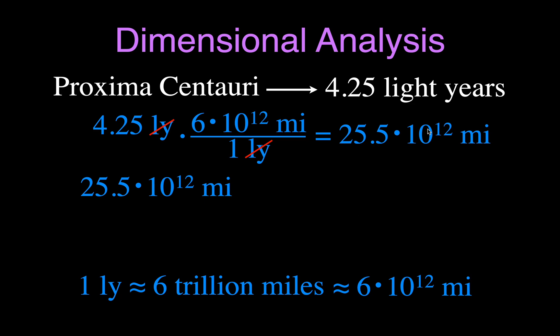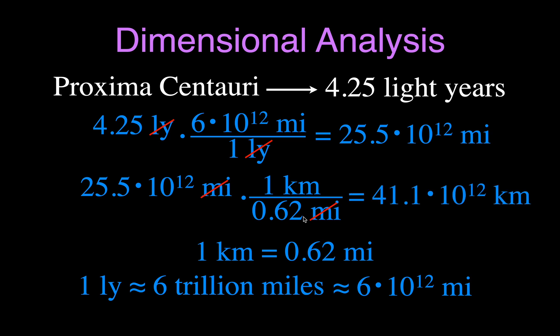Now we have the same value here, and we're going to convert into kilometers. One kilometer is 0.62 miles. So, therefore, we can put the mile on the bottom because we want to be able to cancel the mile. The kilometer goes on the top with the one, and you get that's 41.1 times ten to the twelfth kilometers. That's the closest star. Most stars are much farther away.